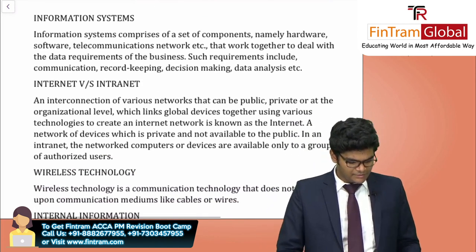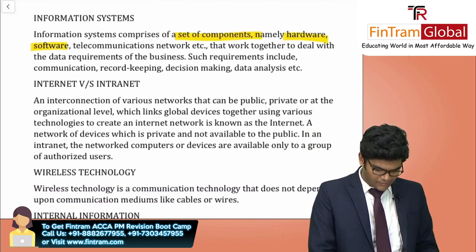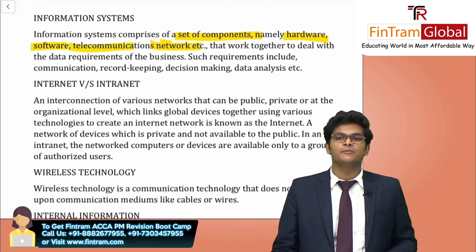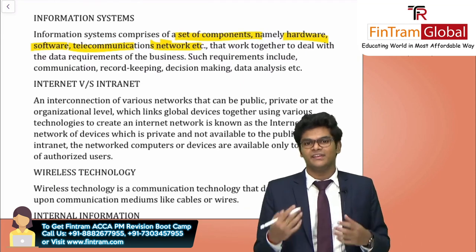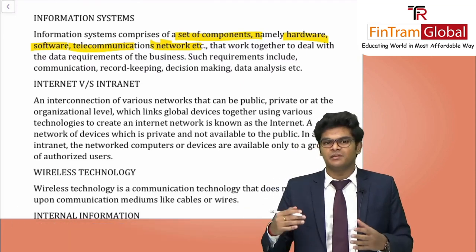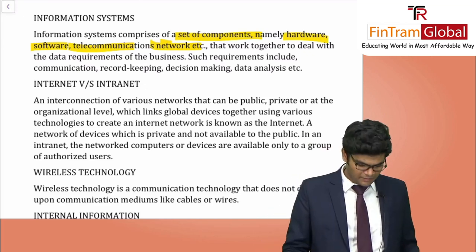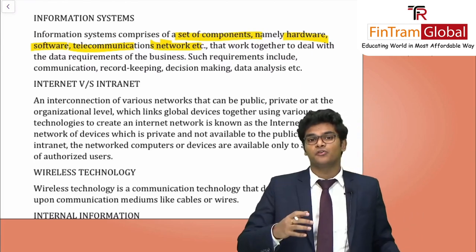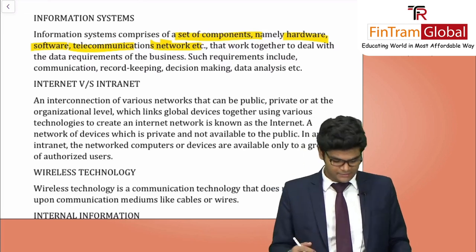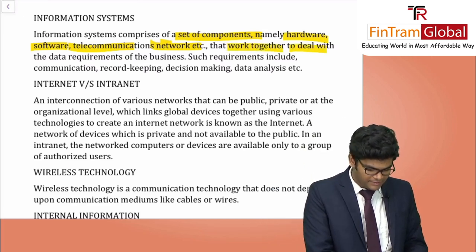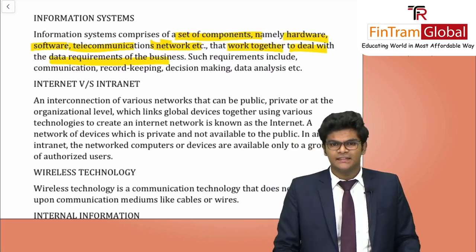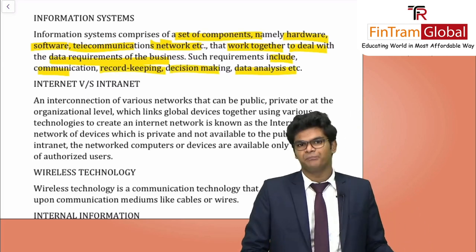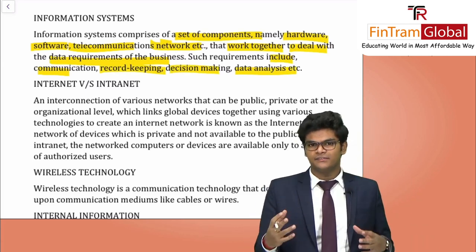An information system comprises a set of components — hardware, software, and telecommunication networks — used to communicate and conduct business operations efficiently. Every organisation has data requirements, and information systems work together to meet those needs, including communication, record keeping, decision making, and data analysis.